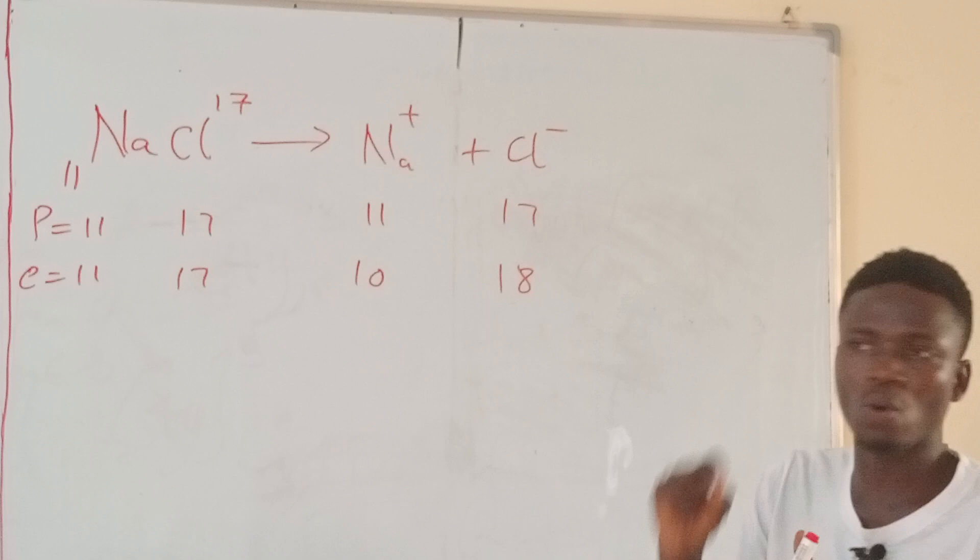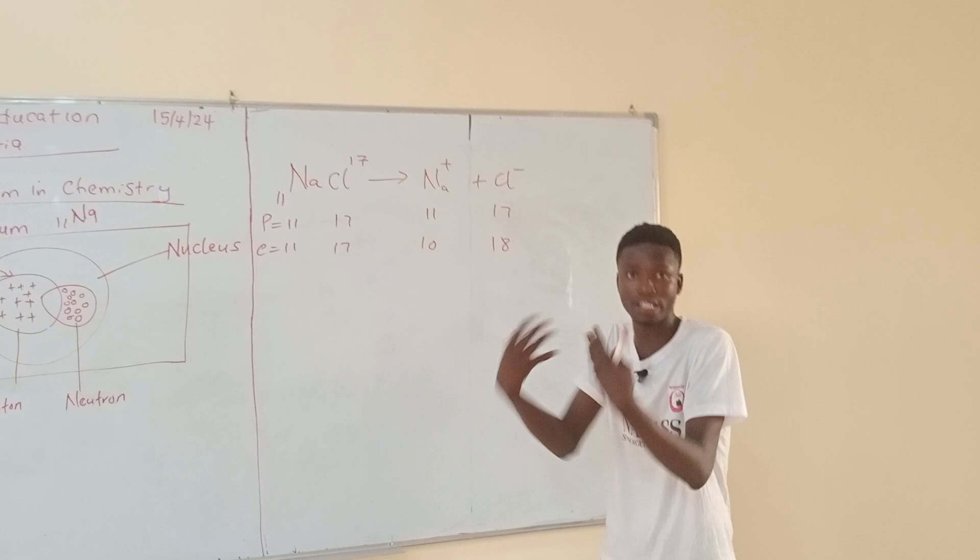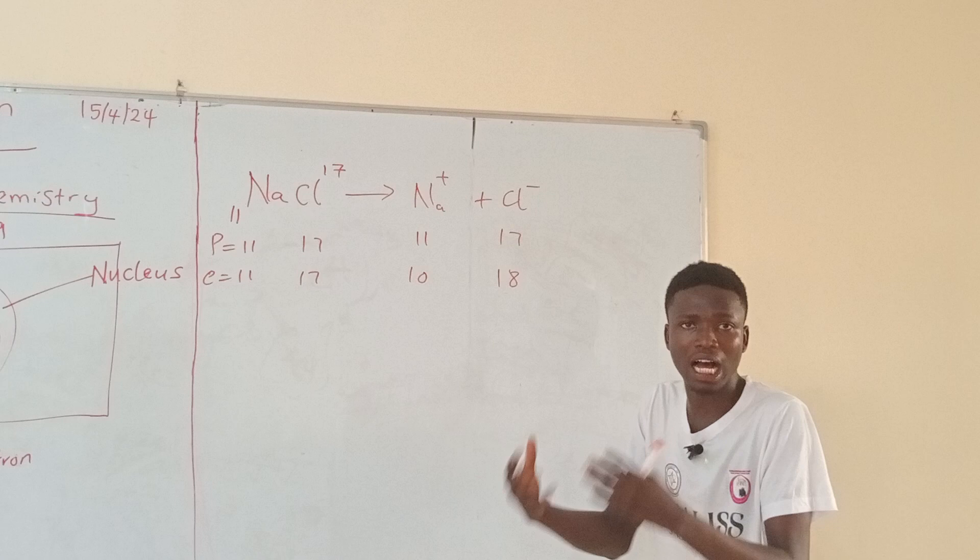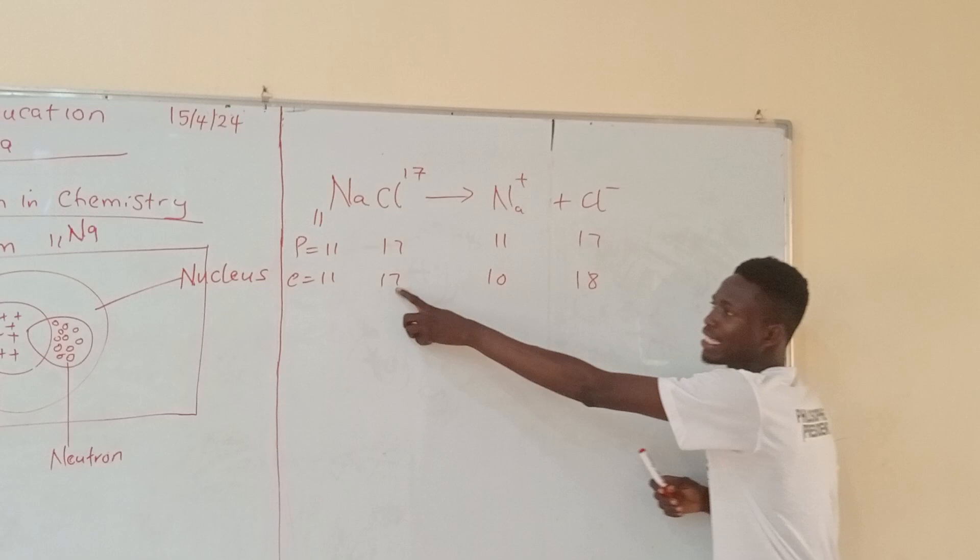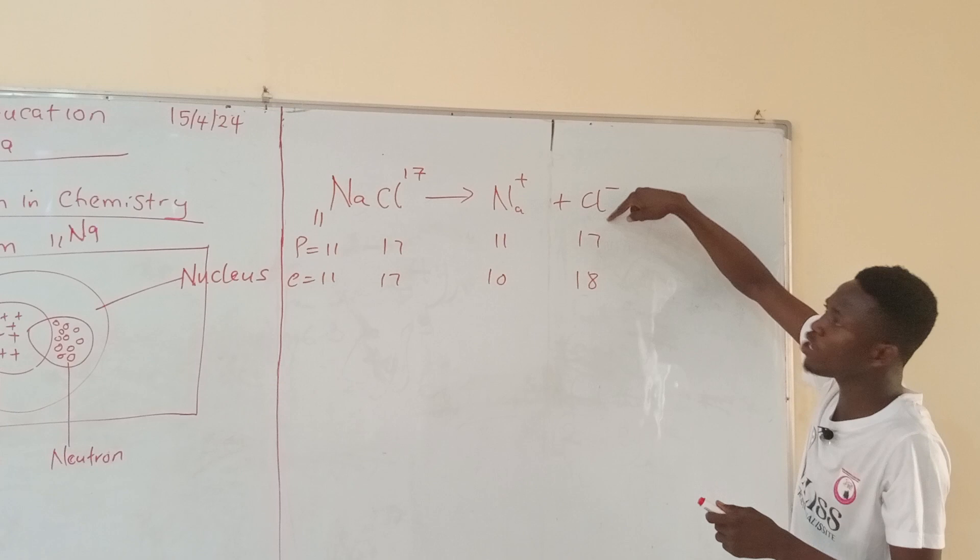So only electron is open to be stolen. Only electron can be stolen. That is why the electron of sodium has been stolen by somebody that is more powerful. Chlorine stole one electron from sodium to make it 10, while chlorine gained one electron to become 18. But the proton number of chlorine is still 17. That means proton number under any scenario does not change.